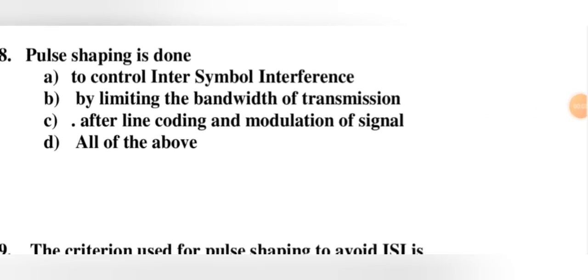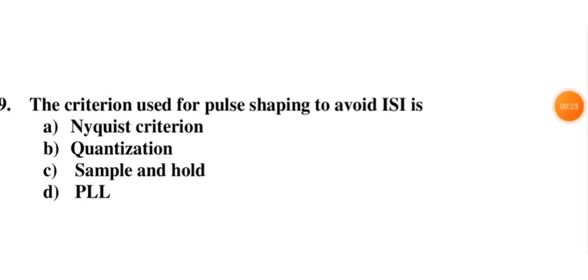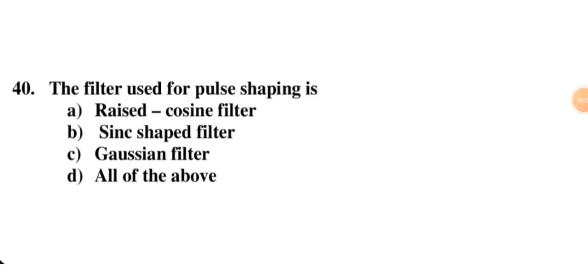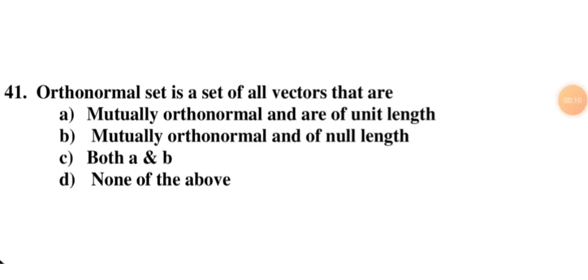Reducing ISI, limiting data bandwidth after line coding and modulation — both signal A and B are correct, so D is correct — all criteria apply. The Nyquist criteria states Fs should be greater than or equal to 2Fm. If this relationship is satisfied, there is no interference. The raised cosine filter is used here. The set of all vectors that are mutually orthonormal and of unit length — option A is correct for this question.